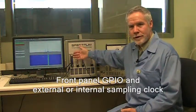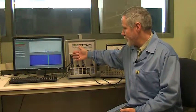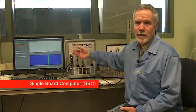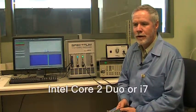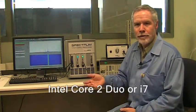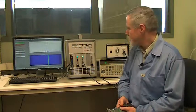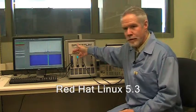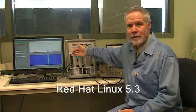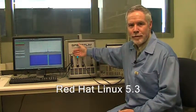The third board in our system here is the single-board computer. This is an Intel single-board computer using Intel Core 2 Duo. The Core 2 Duo can also be upgraded to an i7. We have SBC options available with an i7, and you can use any third-party single-board computer that's compatible with OpenVPX 3U. The single-board computer is running Linux. It's Red Hat Enterprise Linux.